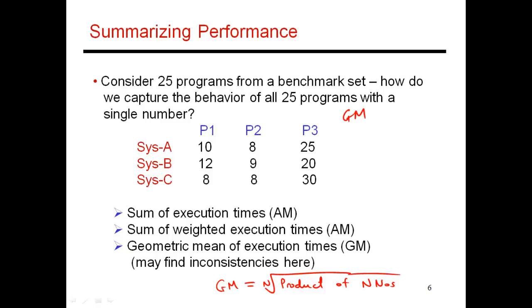So the GM in this case for system A would be the cube root of 10 times 8 times 25. In this case, if a program has a rather large execution time, it does play a pretty big role in determining the GM. The key difference is that if I introduce an optimization that improves one of the three programs, it really doesn't matter which of the three programs that optimization applies to.